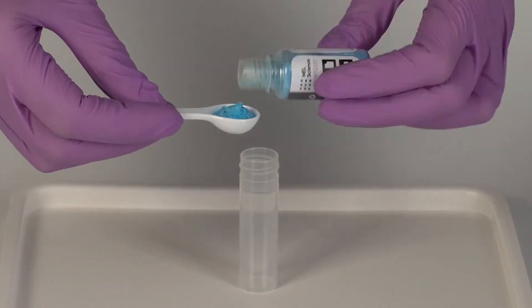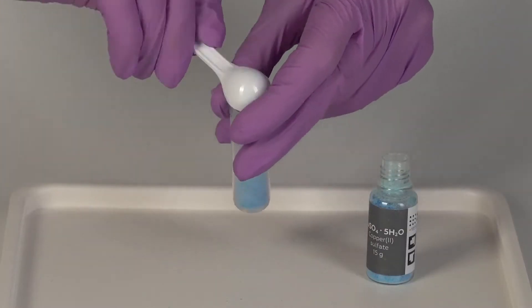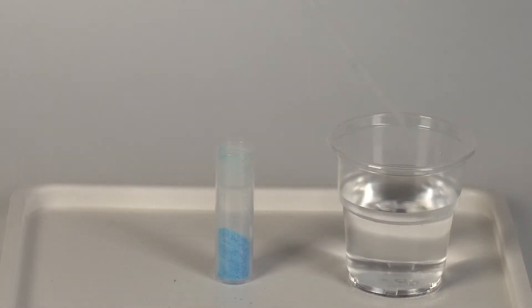Take the vial and add two big spoonfuls of copper sulfate. Using a pipette, add 10 drops of water.